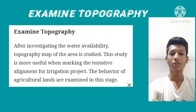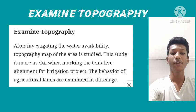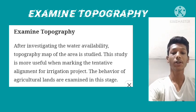Examine topography. After investigating the water availability, a topography map of the area is studied. This study is most useful when marking the tentative alignment for the irrigation project. The behavior of the agricultural land is also examined at this stage.